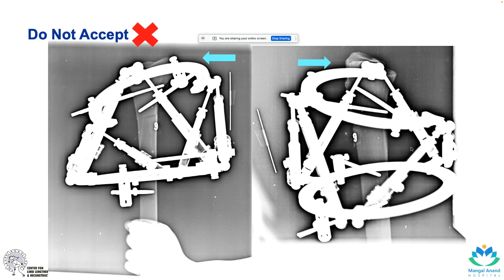Do not accept an X-ray like this. This is a metaphyseal deformity. In the AP view, the joint is not seen well. The beam is not centered on the joint. The ring is obscuring the joint, so you will not be able to mark the joint line here well. If you don't mark the joint line well, you will not be able to correct the deformity also well.